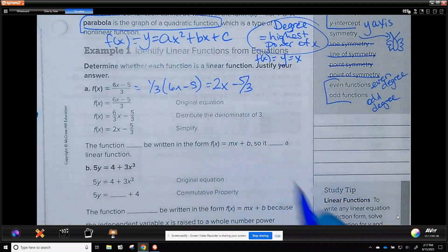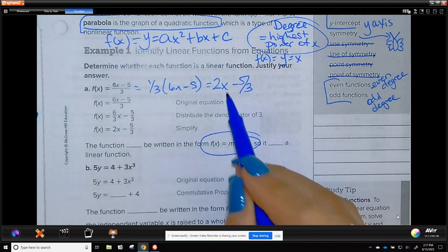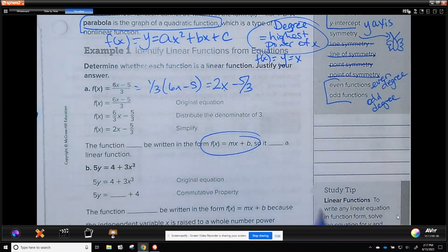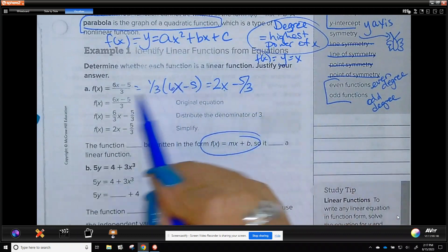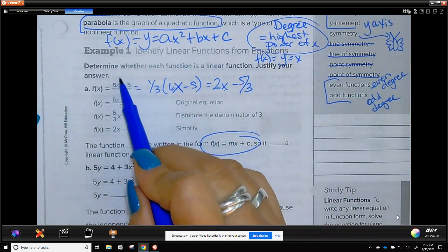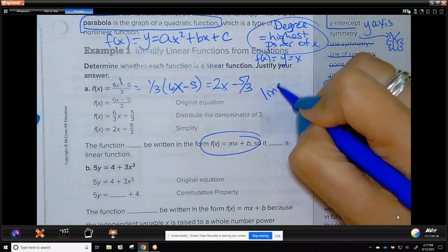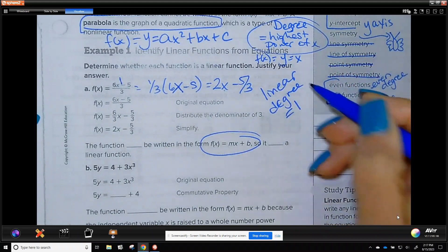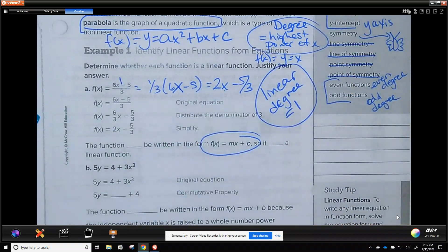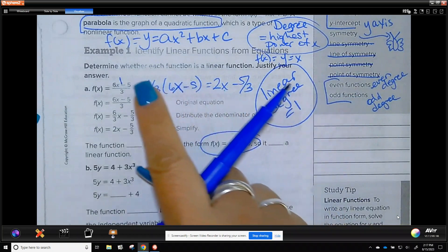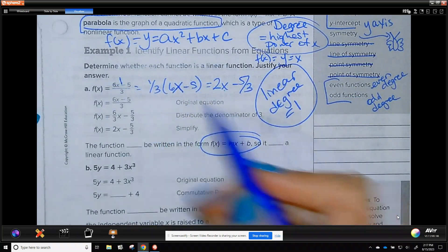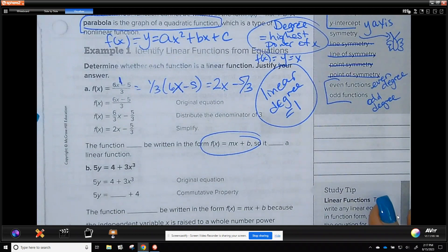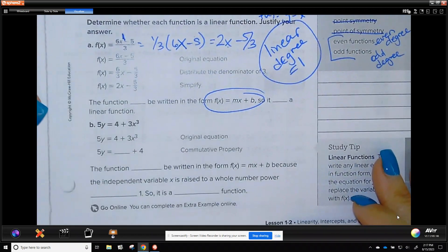Now, the book is saying, if you could write it in y equals mx plus b form, then it is a function. What I want you to get used to looking at is the degree, because we're going to be revisiting degree all year. So, degree is, this is my function. X has a power of 1. Linear? Yes, because degree equals 1. That's why this is linear. You don't have to even rewrite it to do that. You just look at the power of x.